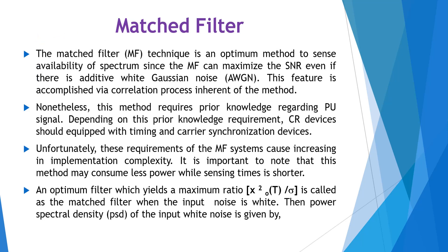The match filter is an optimum method to sense the availability of spectrum, since the match filter can maximize the SNR, that is signal to noise ratio, even if there is additive white Gaussian noise. This feature is accomplished via the correlation process inherent to the method.